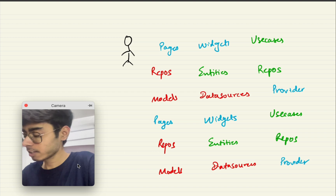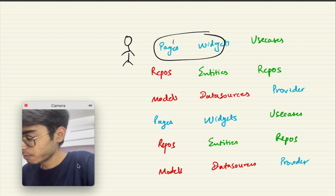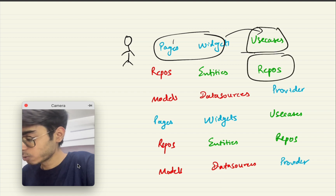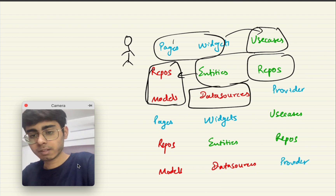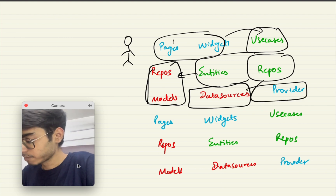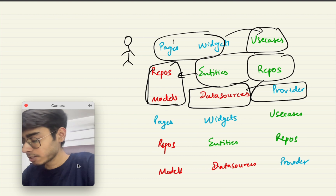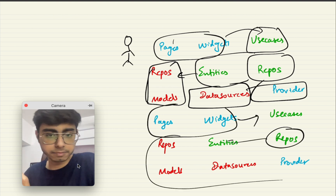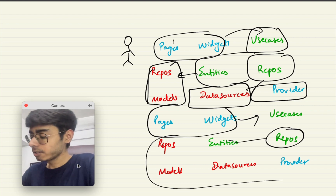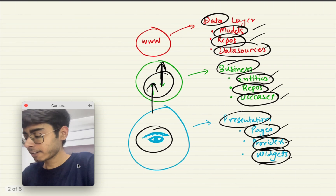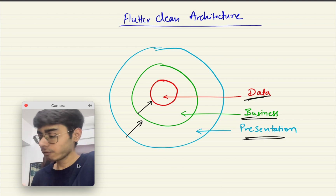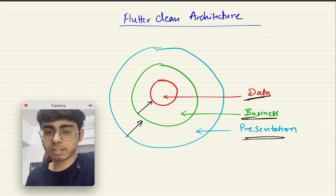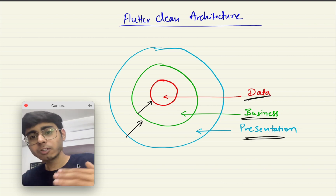This is just a summary: from pages and widgets, we call use cases. Use cases use repositories through entities — entities are your data structures that help pass data. Then we call repository models, which communicate with data sources. Data sources can be remote or local, and they update your provider. Pages and widgets to use cases, use cases to repositories — and like this the flow continues. I hope clean architecture is clear: the significance of data, business, and presentation layers. If you're using clean architecture in your company project, try to use this structure and name your folders this way. This is very clean architecture — it will separate your layers very well.